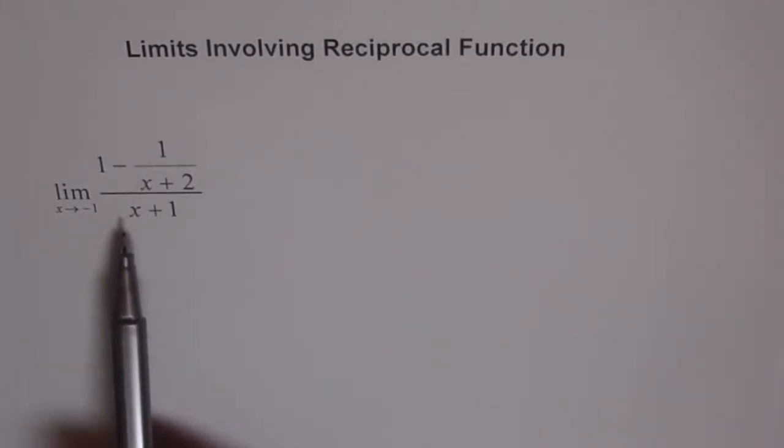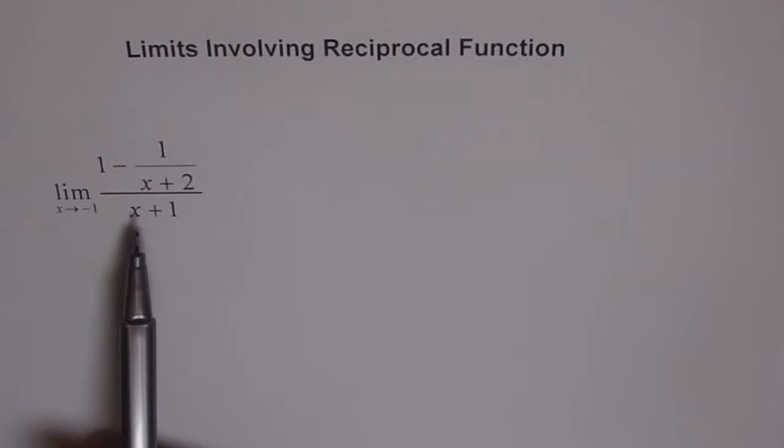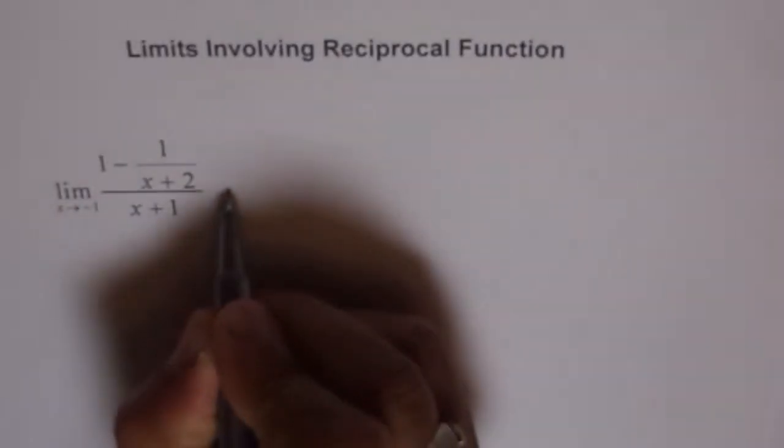So whenever we get 0 over 0, then we need to apply a few techniques. One of them is to simplify and write the function in simplest form. The second is factoring and the third which you learn is the rationalization. Here we can solve by simplifying and here is how we simplify it.